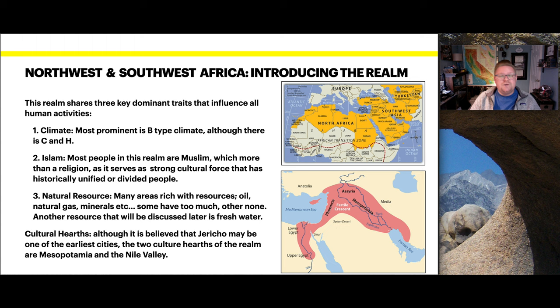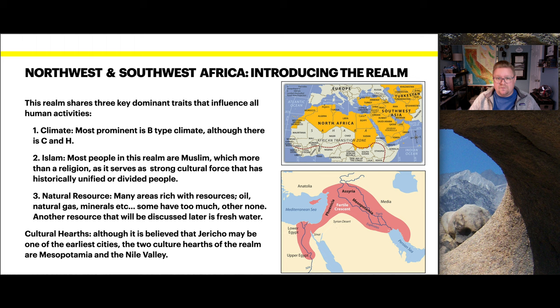Regarding cultural hearths: although it is believed that Jericho may be one of the earliest cities, the two cultural hearths of this realm are Mesopotamia and the Nile Valley. As we can observe in the diagram, I've provided the regions of North Africa, Southwest Asia, and Turkestan. Down here we can see the Fertile Crescent, and Mesopotamia is really at the central point of that Fertile Crescent.